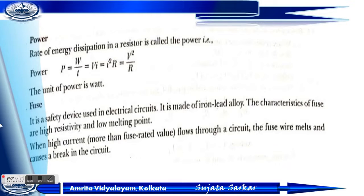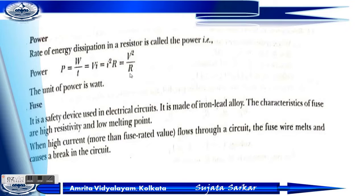The next topic is power. The rate of energy dissipation in a resistor is called electric power. It is denoted as P equals W divided by T, or we can write P equals VI, which equals I²R, or V² divided by R. The unit of power is Watt.